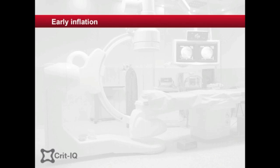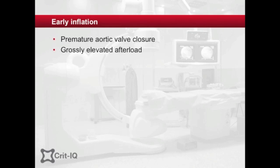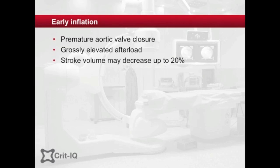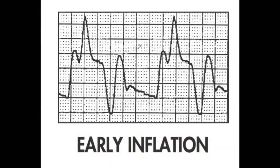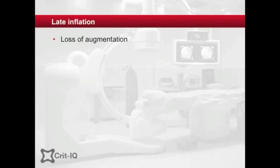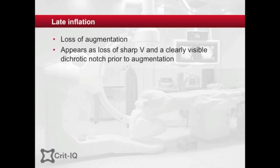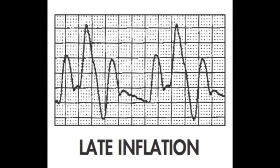If the balloon is inflated early, before the aortic valve has closed — before rather than at the dicrotic notch on the arterial pressure waveform — the aortic valve is forced closed prematurely and there is an increase in afterload as the left ventricle contracts against the closed aortic valve. Stroke volume can be decreased by as much as 22%. Aortic regurgitation may also occur. Late inflation of the balloon reduces diastolic augmentation and its benefits. This is displayed on the pressure waveform as the loss of the sharp V at the dicrotic notch, with a space between the notch and the diastolic augmentation peak.